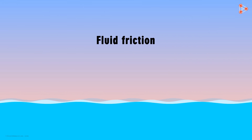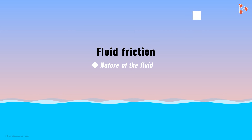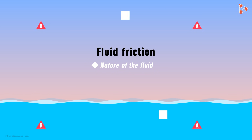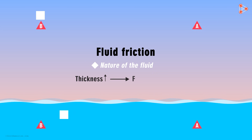What does fluid friction depend on? The first obvious factor is the nature of the fluid. Consider an object moving from point A to B through air, and a similar object travelling from A to B through water. Which encounters more resistance? Clearly, it will be through water. More the thickness of the fluid, greater will be the frictional force acting on an object moving through it.